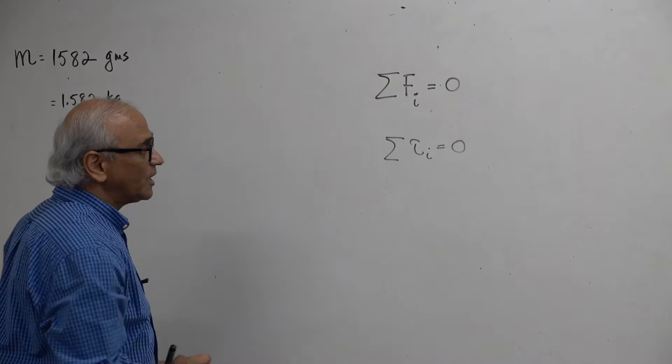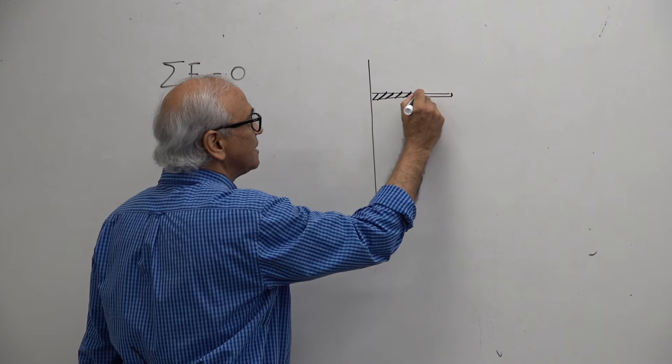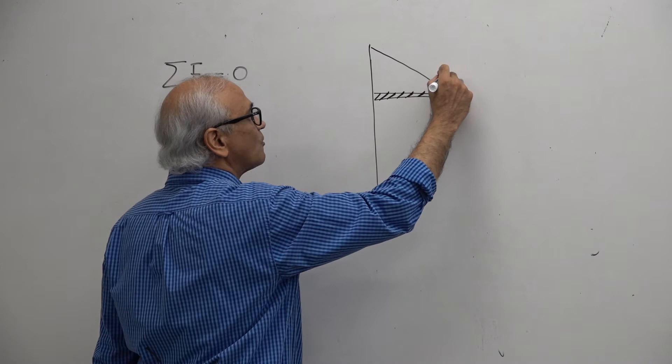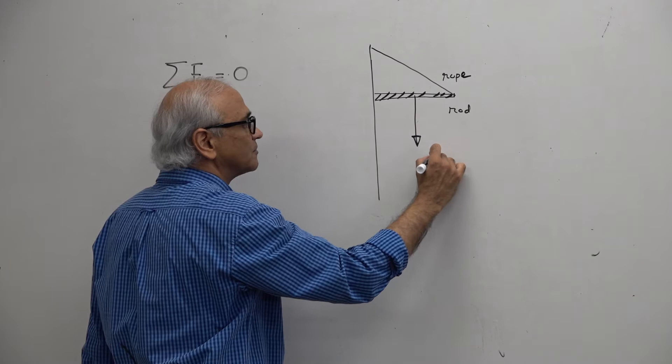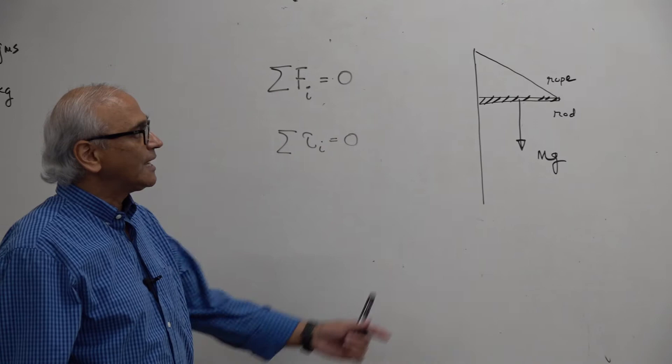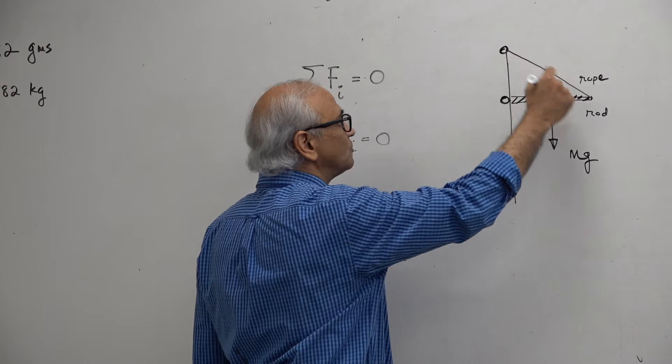Let's say that you have an equilibrium system. For example, you can have something like a rod, and it has a certain mass M. You have a rope, which we consider massless. The rod is in equilibrium because it is being held in two places: one over here at the wall, and then over here with the rope.